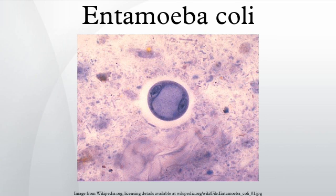Morphology: Entamoeba species all come in monogenetic forms, or having one-generation life cycles. E. coli has three distinct morphological forms that exist during the life cycle: trophozoite, pre-cystic stage, and cystic stage. This life cycle gives rise to the general way of how Entamoeba species form.